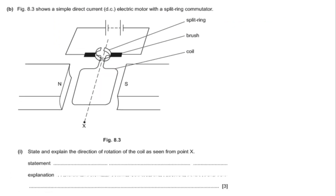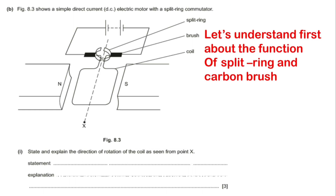Figure 8.3 shows a simple DC electric motor with a split ring commutator. You can see the different parts of the DC motor: the split ring, brushes, and coil. The question is: state and explain the direction of rotation of the coil as seen from point X. Before answering, we will discuss the function of the split ring and carbon brushes.